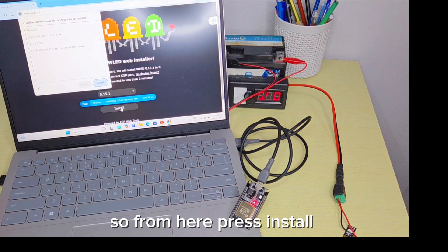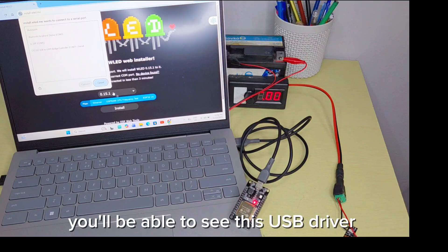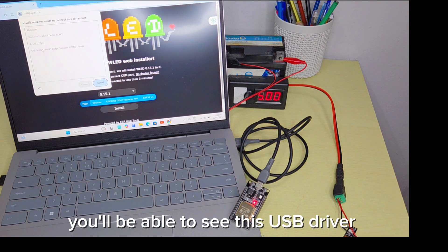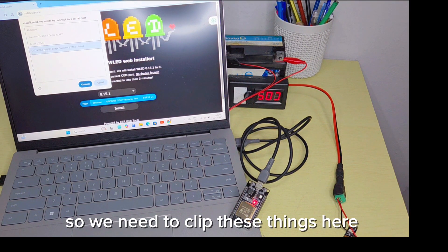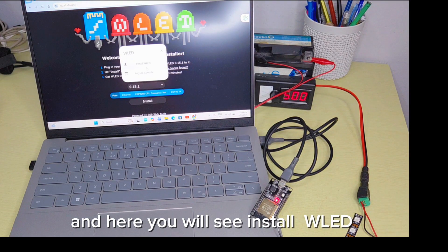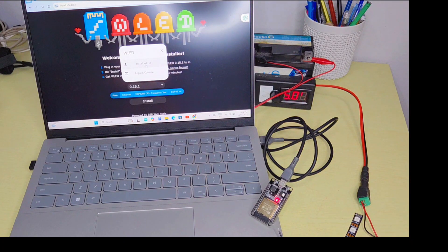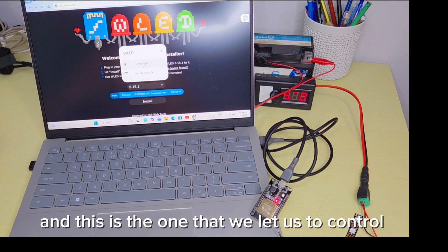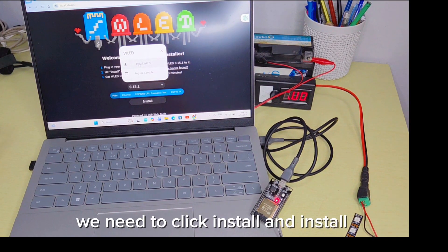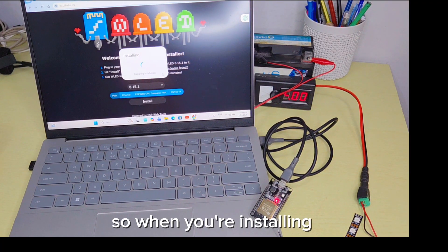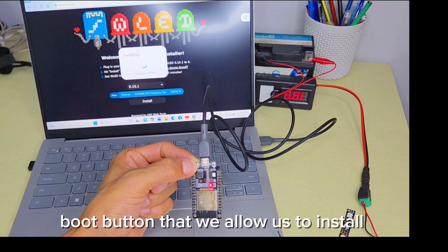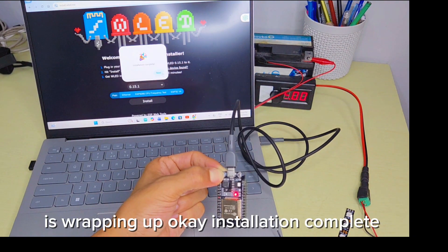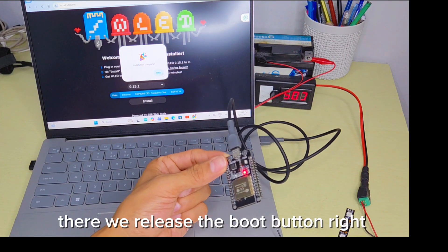Click install. You'll be able to see the USB driver to connect to your ESP32. You need to connect and install the WLED. When you're installing, you need to press your ESP32 boot button that will allow us to install. Installation complete, then we release the boot button.